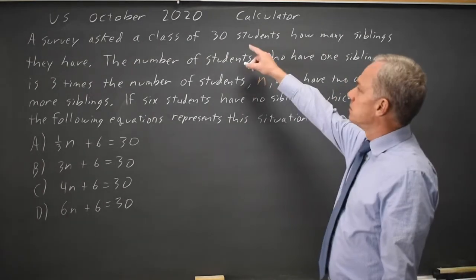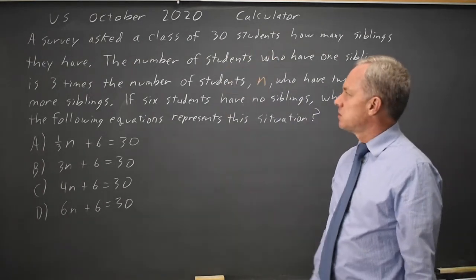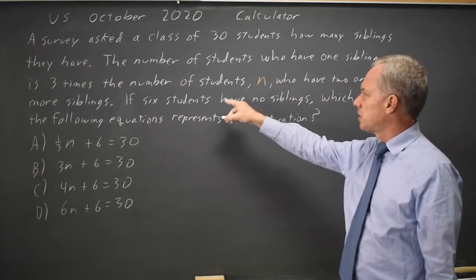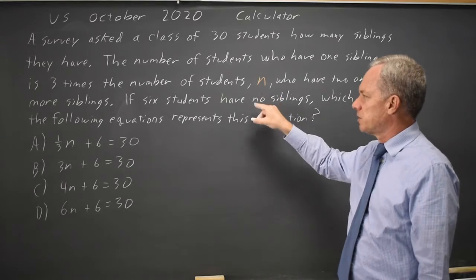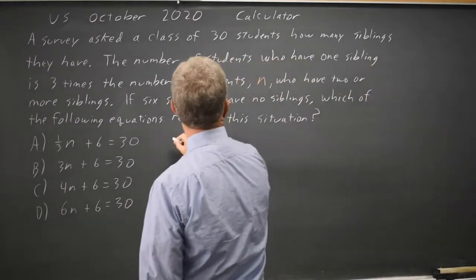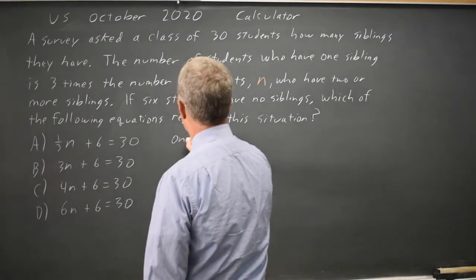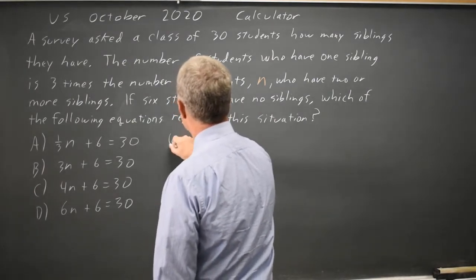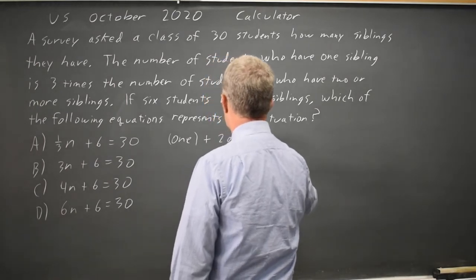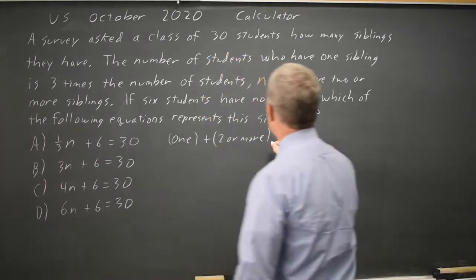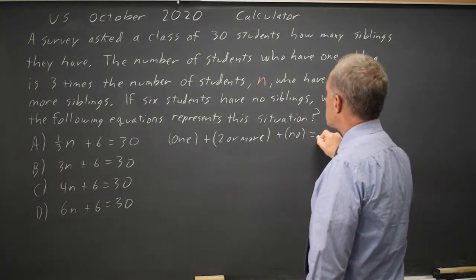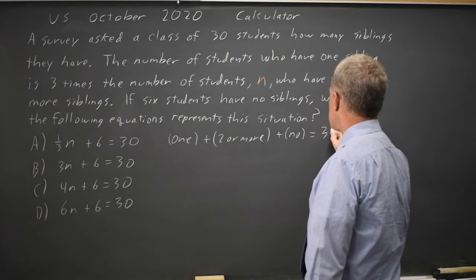A class of 30 students will be asked how many siblings they have. The number of students who have one sibling is three times the number who have two or more siblings, and six students have no siblings. So if we look at one sibling plus two or more siblings plus no siblings, that's the total number of students in the class, which is 30.